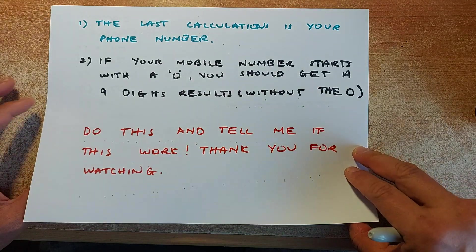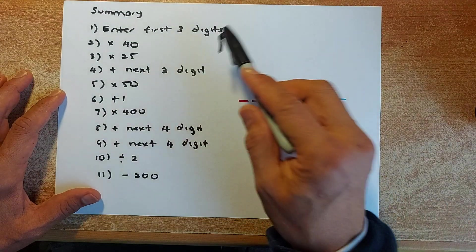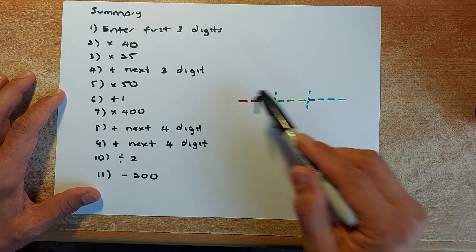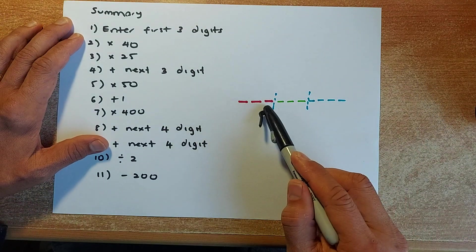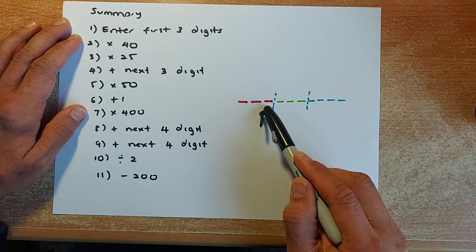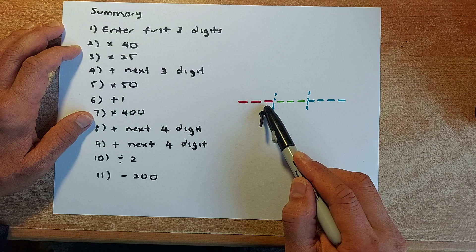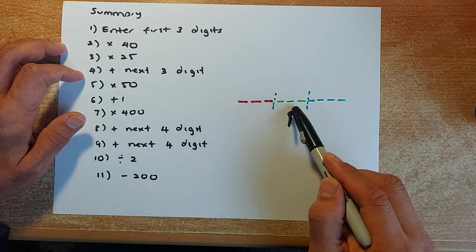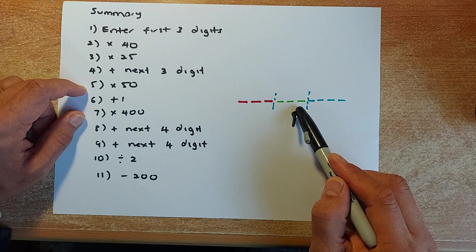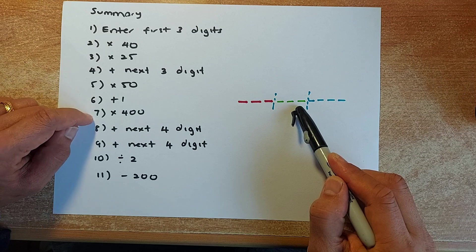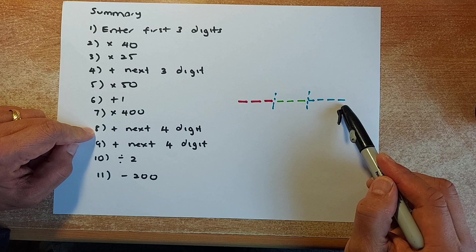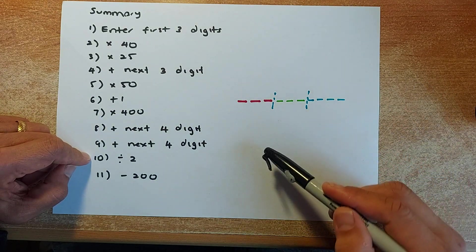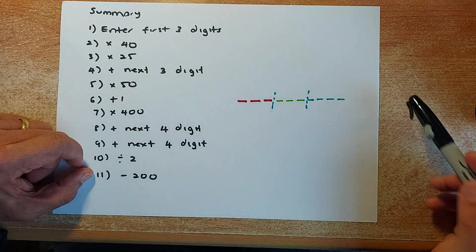To summarize: make your phone number into 10 digits — if it is 8 digits put 2 zeros, if it is 9 digits put a 0 at the front. Enter the first 3 digits. Multiply by 40, equals. Multiply by 25, equals. Add the next 3 digits, equals. Multiply by 50, equals. Plus 1, equals. Times by 400, equals. Add the last 4 digits, equals. Add the last 4 digits again, equals. Divide by 2. Minus 200. And that will give you your phone number.